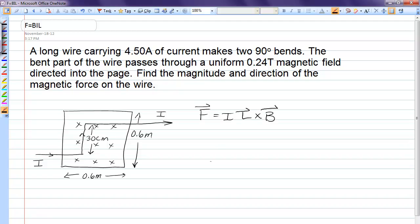Let's do this bottom segment. So I is to the right, B is in, therefore the force on this little horizontal piece is up. We'll call it F1.